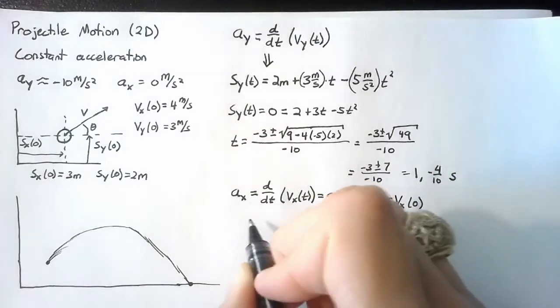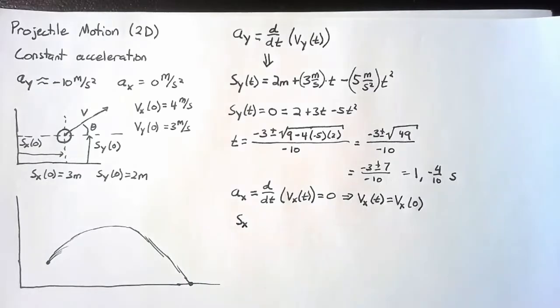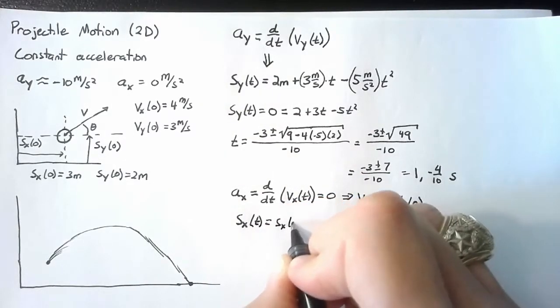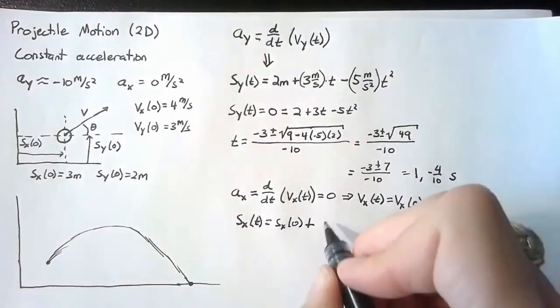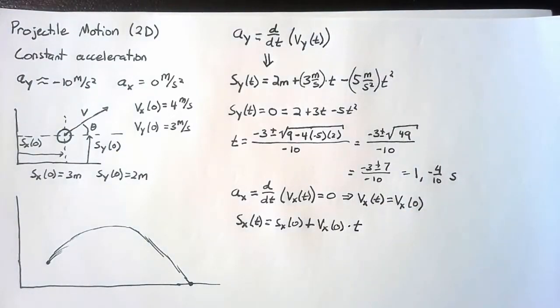And we can go ahead and integrate again and we end up with the position in the x direction at time t being equal to the initial position plus our initial velocity multiplied by the current time.